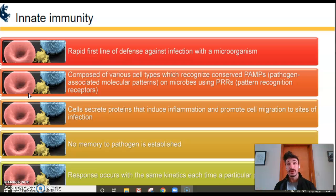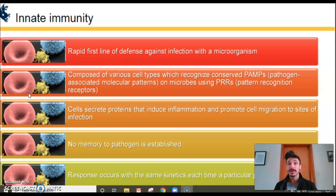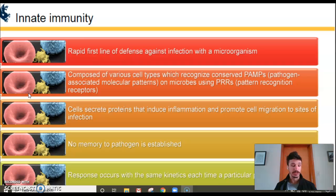Innate immune system cells can also secrete proteins called chemokines, which draw in and attract other immune cells to the site where the microbe or pathogen is located.